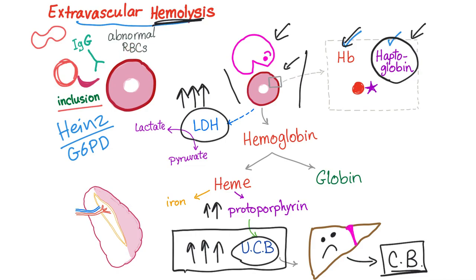To summarize extravascular hemolysis: there is an abnormal RBC due to an antibody, abnormal shape, or inclusion body. Splenic macrophages attack the red blood cell. Haptoglobin decreases because it is attacked. LDH is secreted after hemolysis, so its level increases in the plasma. Hemoglobin is destroyed; protoporphyrin increases; unconjugated bilirubin increases because the liver cannot handle this huge amount of hemolysis.